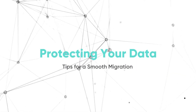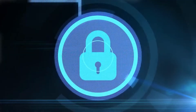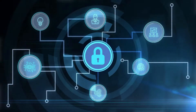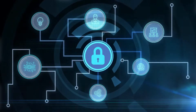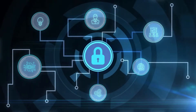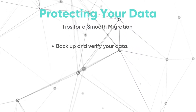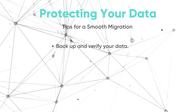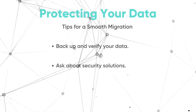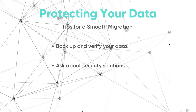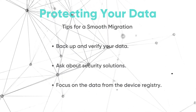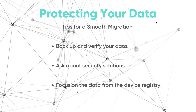Protecting your data: tips for a smooth migration. Google's partner ecosystem offers best-in-class IoT platforms with strong data security features. When it comes to your data, it's best to be on the safe side. Always verify that data has been successfully migrated and backed up before moving to a new device registry solution. Ask your chosen partner for details about the security features their solution provides. The only data that needs to be migrated is from the device registry — existing downstream data stores will not be impacted by the migration.